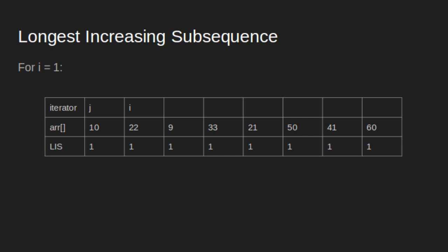Here 22 is greater than 10, so LIS of i becomes LIS of j plus 1, that is 1 plus 1 equal to 2. For i equal to 2, is 9 greater than 10? No, so move forward. Is 9 greater than 22? No, so move forward.